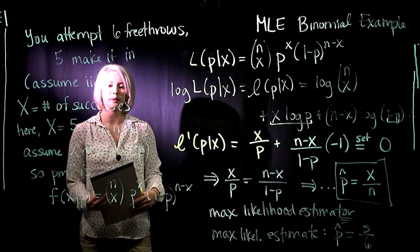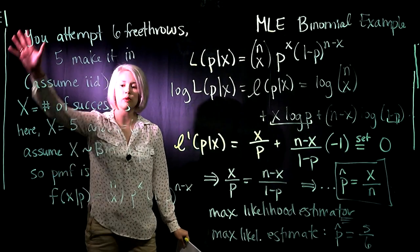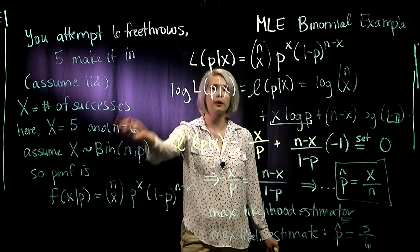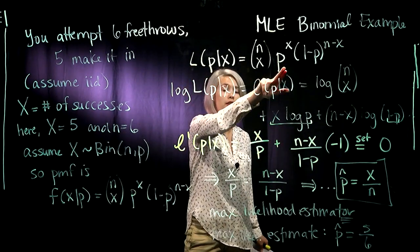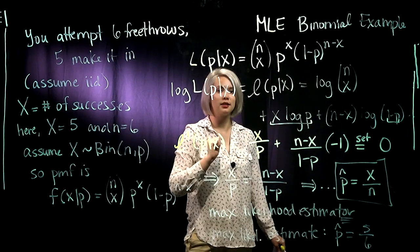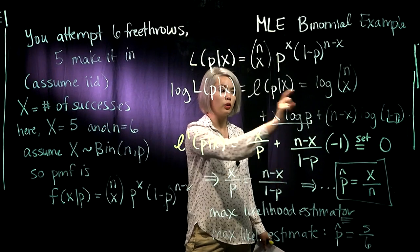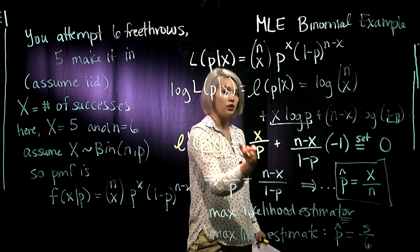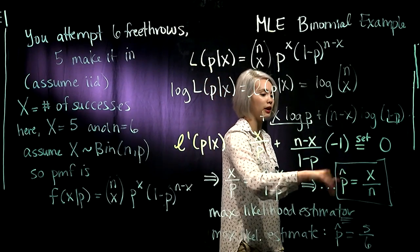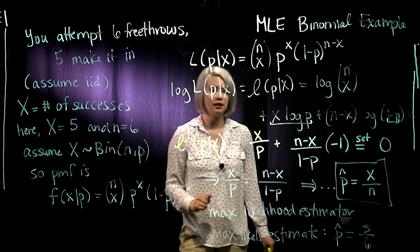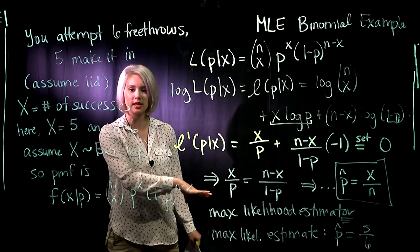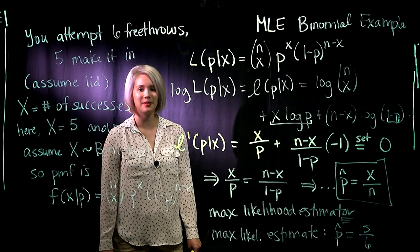Just to wrap it up, in order to do this maximum likelihood stuff we first had to write down the PMF or PDF and then we write down the likelihood. Now we're thinking in this likelihood as p being the variable and x is constant. We take the log, we take the derivative, set that equal to zero, solve for p, and when we have solved for p then we get that that value of p is our maximum likelihood estimator. And then we can go ahead and plug in what is x, what is n here and we get our maximum likelihood estimate.